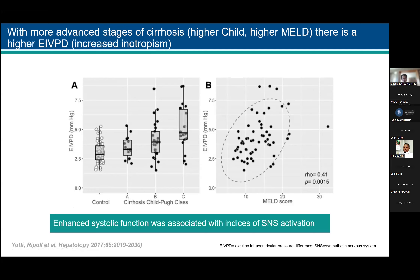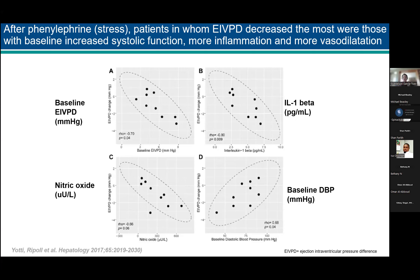This increased systolic function was associated with indices of sympathetic nervous system activation. But once they stressed these patients with phenylephrine, those who had the highest baseline systolic function showed the lowest response to stress — they would decompensate. The patients with highest baseline EIVPD also had more vasodilation, more inflammation, higher IL-1 beta. This indicates that in patients with advanced cirrhosis, whose systolic function at baseline is most increased, stressors like infection will lead to greater heart decompensation.